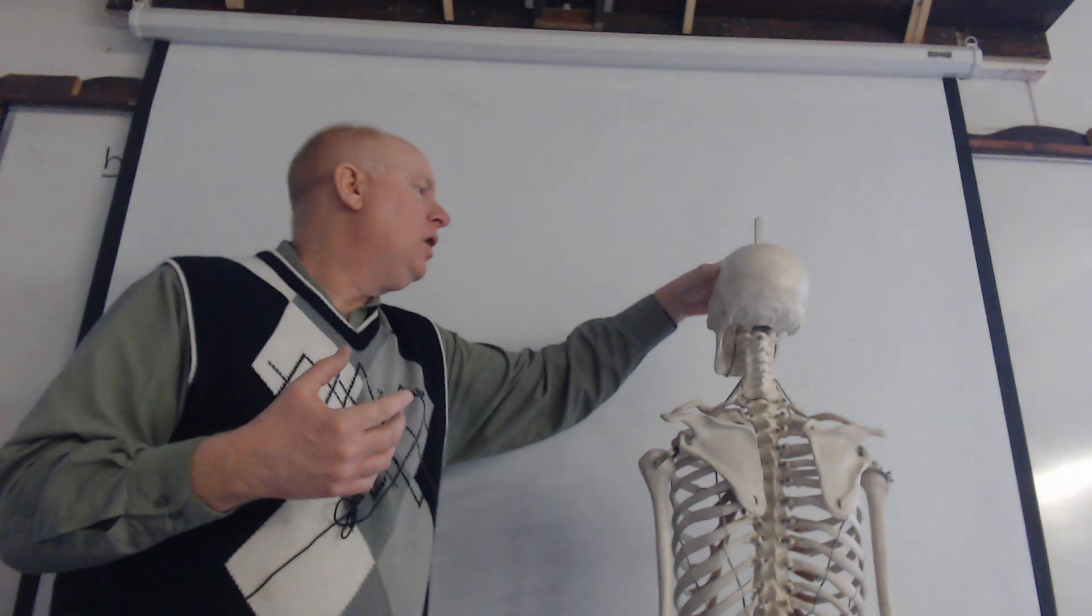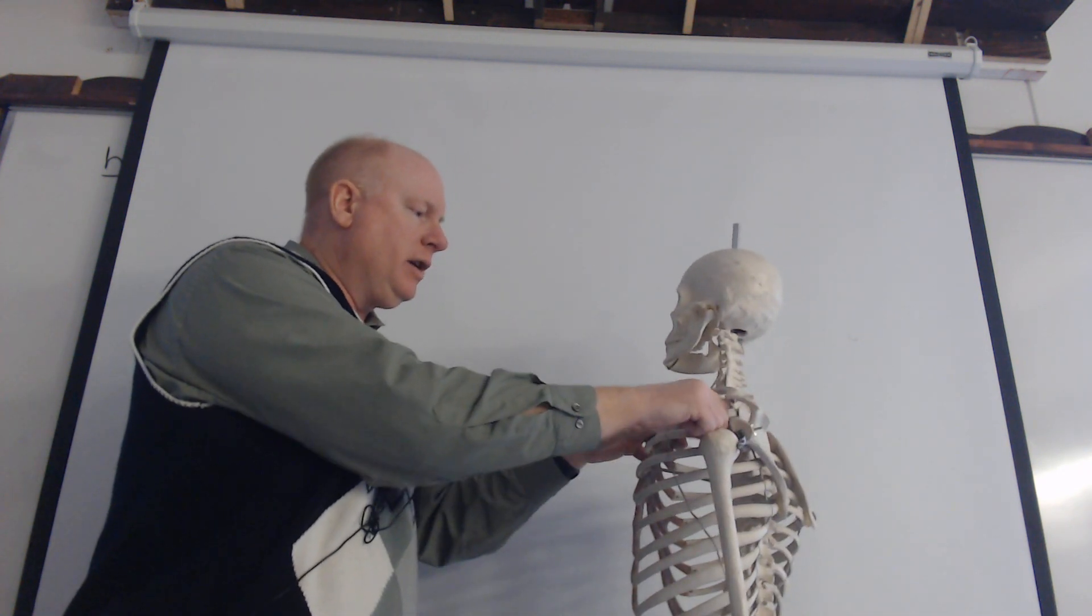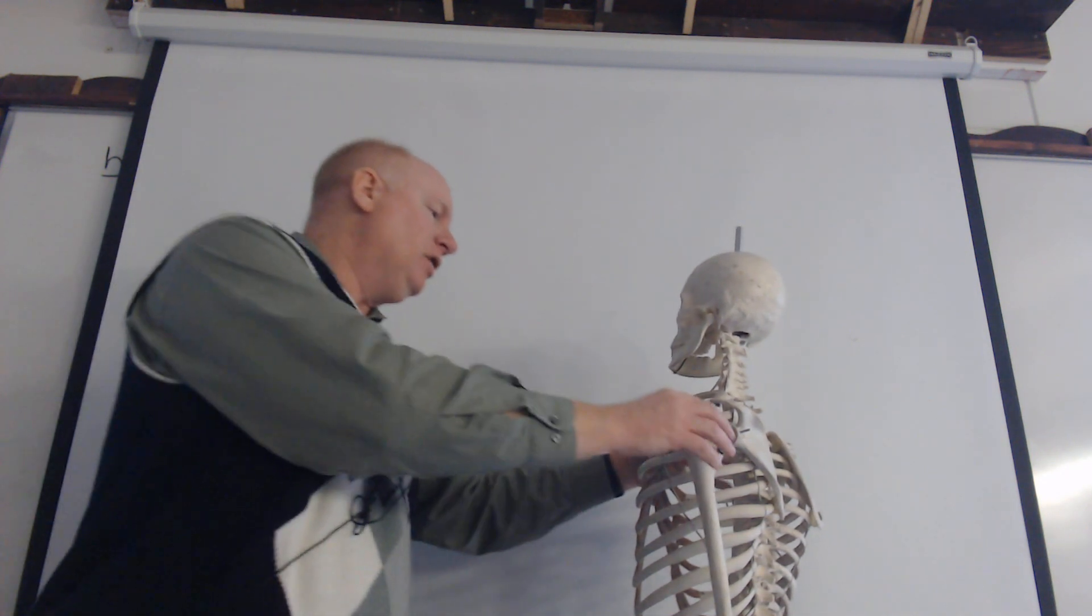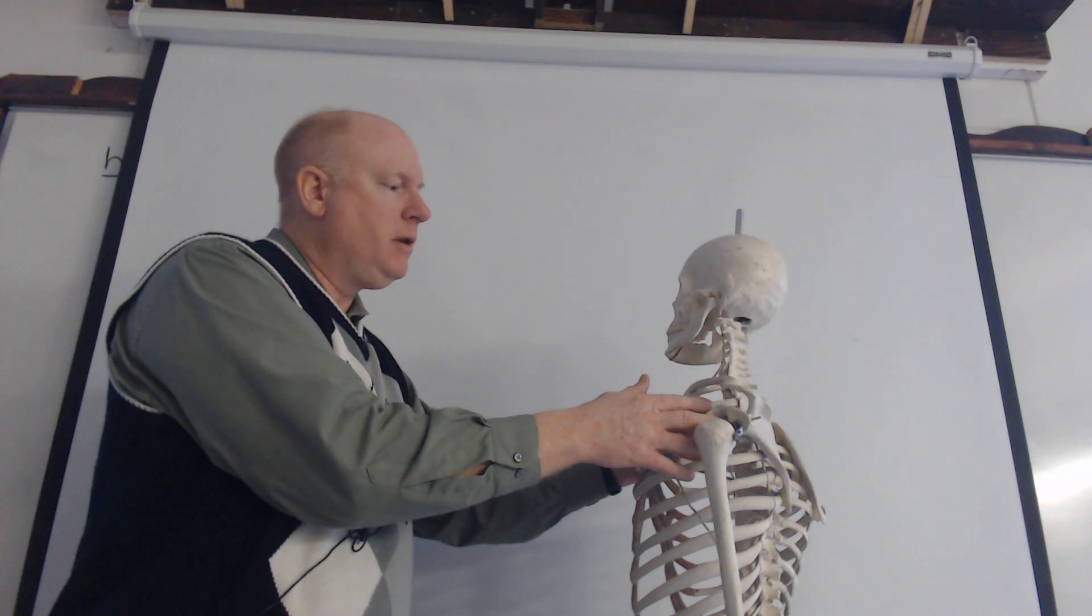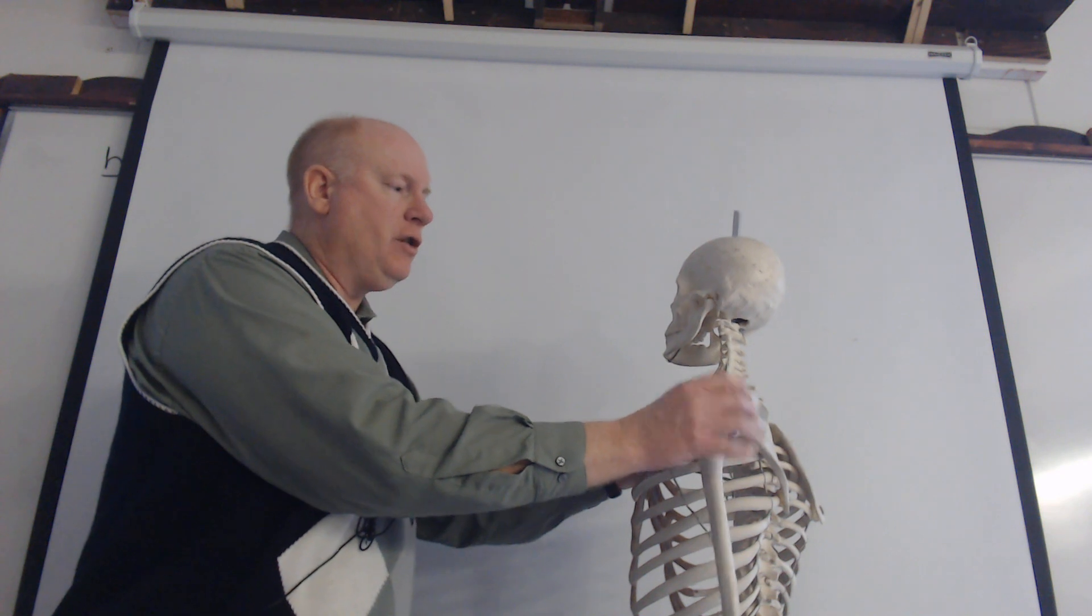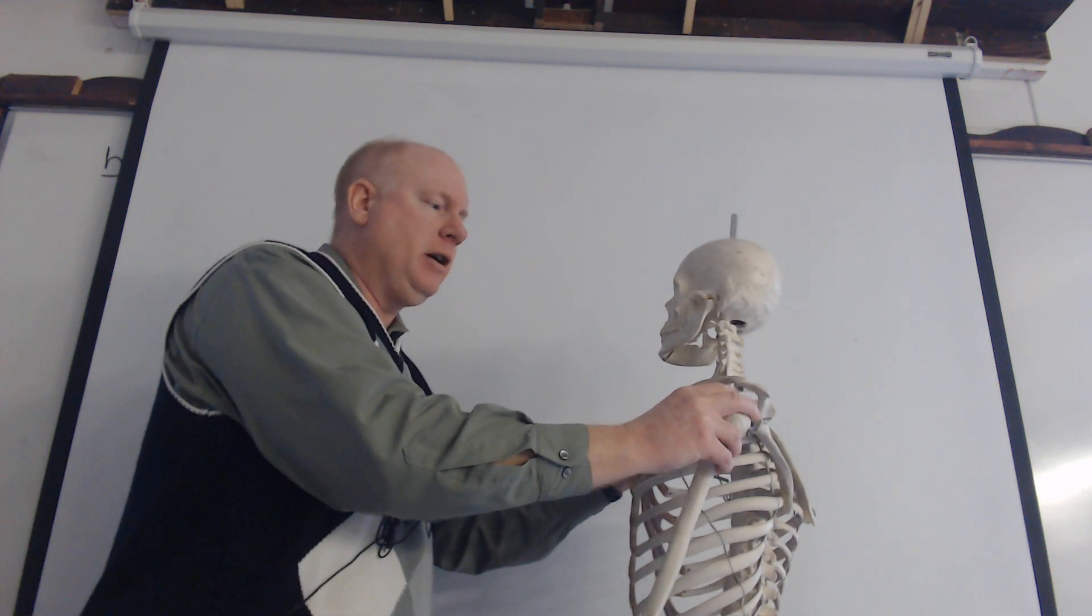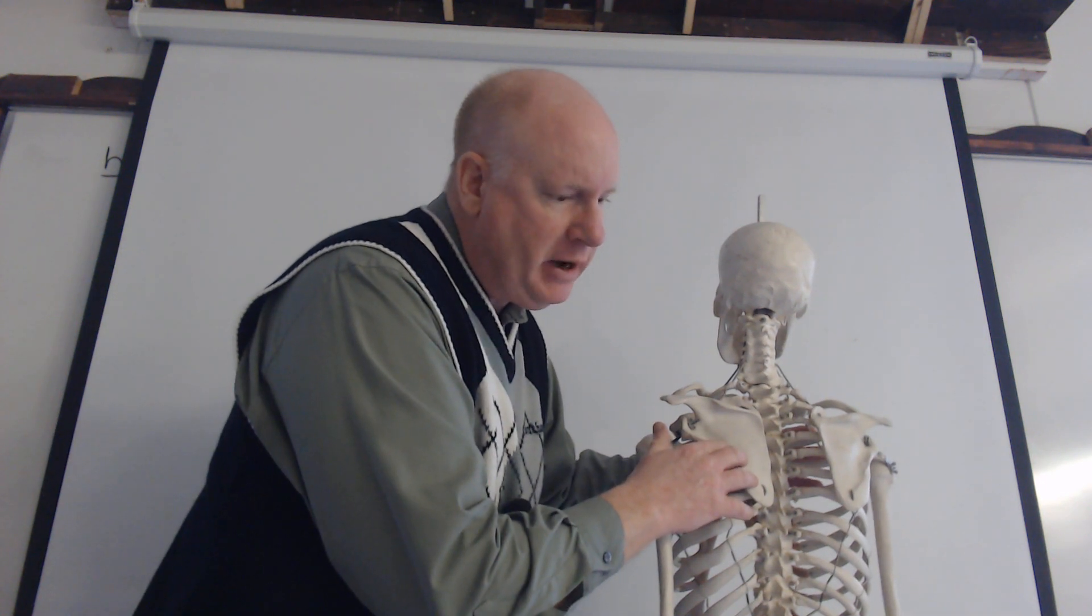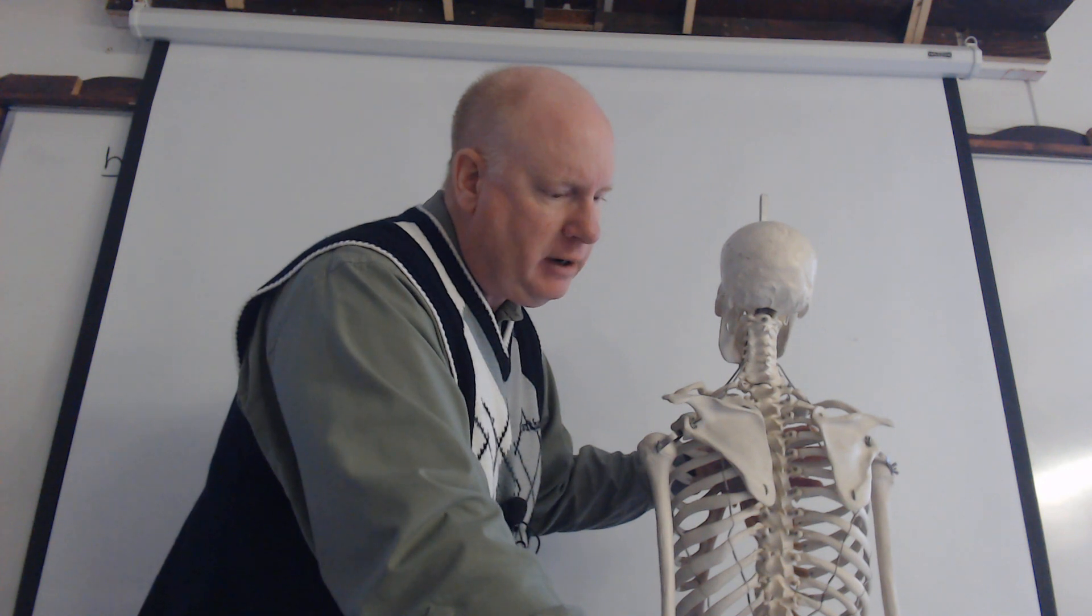So as we're looking at this this bony projection here would be what's called your acromion process. It's just a structure that sticks out and the reason that that's important is because it makes up what we call the glenoid cavity. Now for some reason some of these terms and processes can repeat themselves because even though we had this one this was a condyloid process up here on the mandible down here we have what's called a coracoid process and I think maybe that's latin for ducks bill oddly enough. When you look at the side of this it does kind of look like a ducks bill I guess but underneath here is the coracoid process.